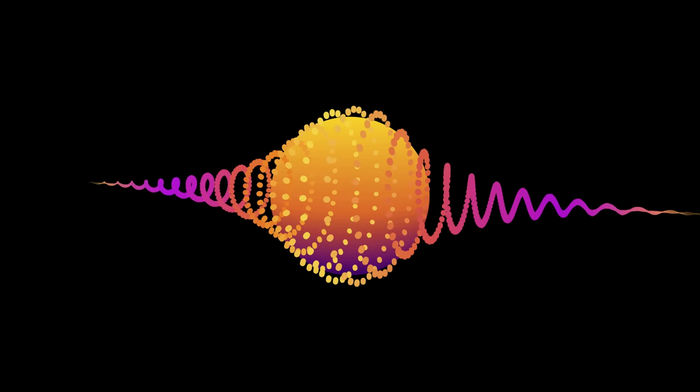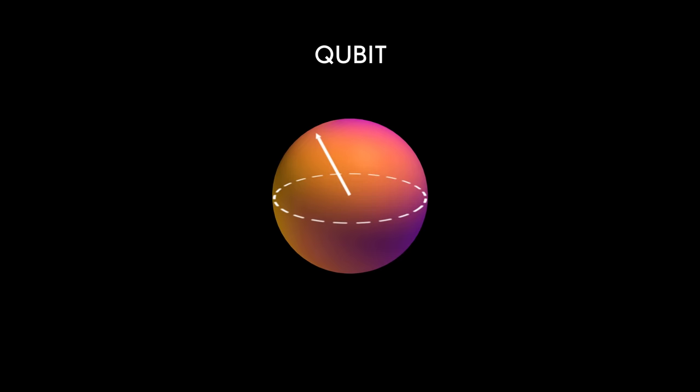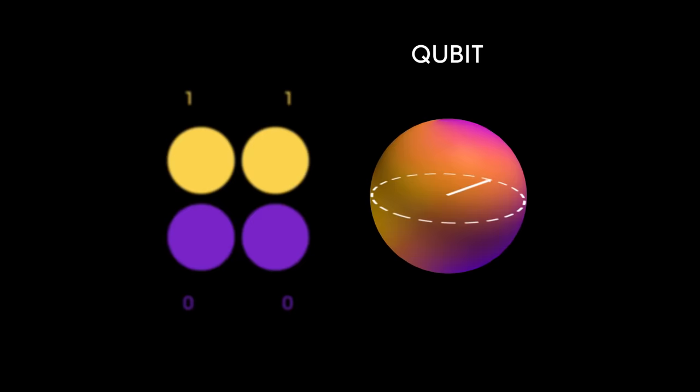But how can quantum computers use amplitudes to store and manipulate information quantumly? This is a qubit. It's the basic computational unit in quantum computing. Qubits are like bits in a classical computer, but with a crucial difference.